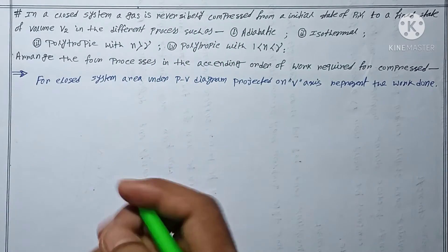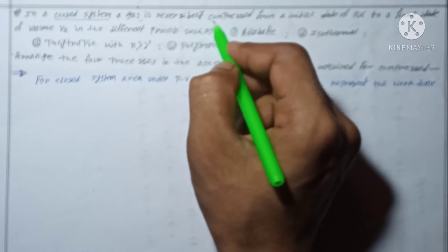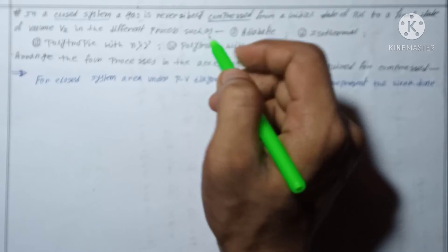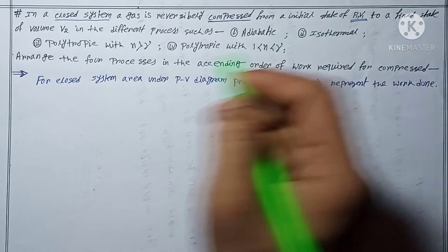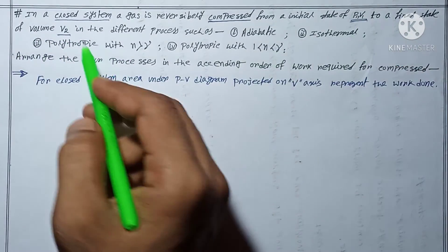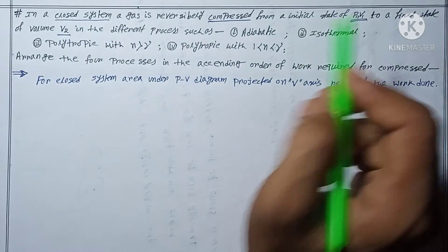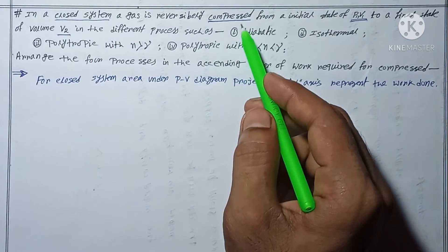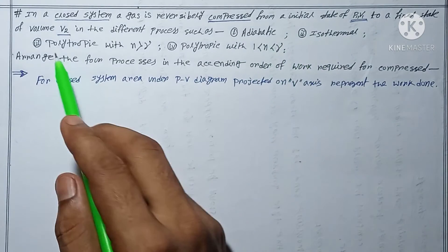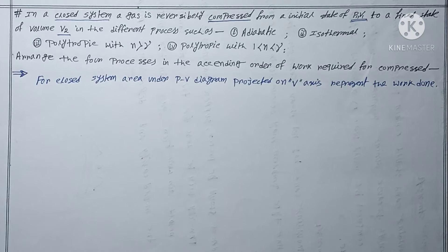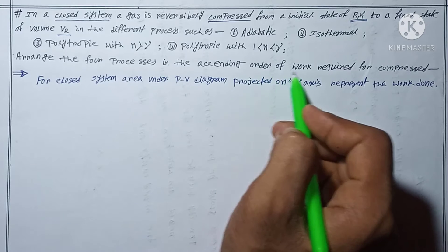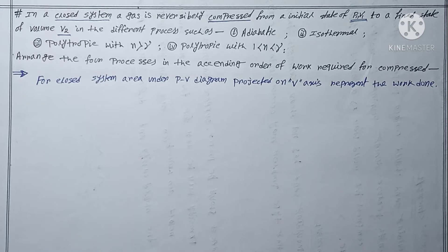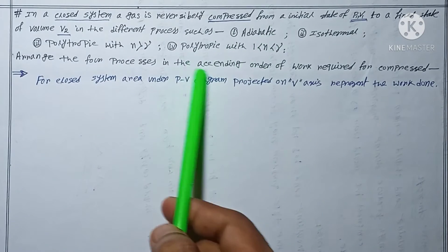In a closed system, a gas is reversibly compressed. The system is a closed system and the gas is reversibly compressed — this term is important; in the previous question the term was expansion, but here it is compression. From an initial state p1, v1 to a final state of volume v2, where v2 is less than v1. The four processes given are: adiabatic, isothermal, polytropic with n greater than gamma, and polytropic with one less than n less than gamma. We have to arrange these four processes in ascending order of work required for compression.